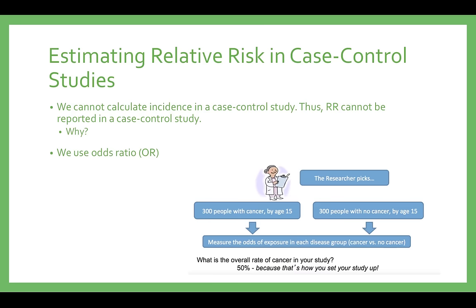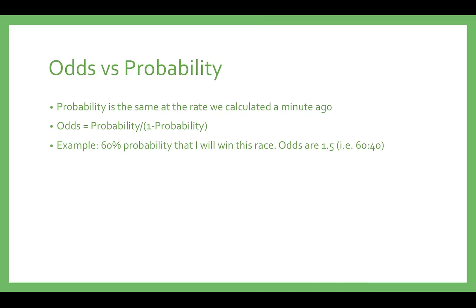Why not? A case-control study compares cases that have experienced the event and controls who have not, and then assesses whether each individual was exposed to a stimulus or not. In the example here, the researcher compared 300 people with cancer to 300 people without cancer. The disease rate is 50% just because that's the way the study was designed, not because 50% of people under 15 years of age have cancer. Thus, a case-control study is retrospective. When relative risk cannot be calculated, as in case-control studies, researchers will often present an odds ratio.